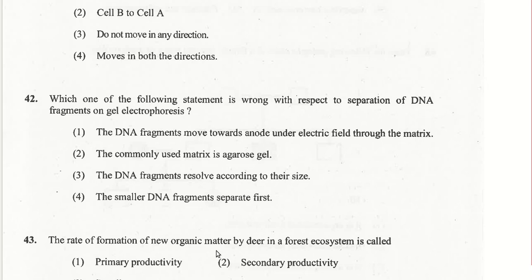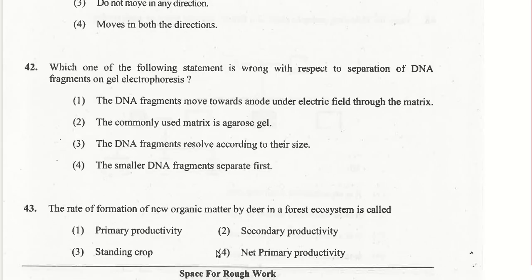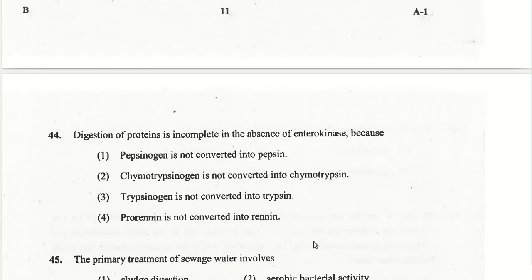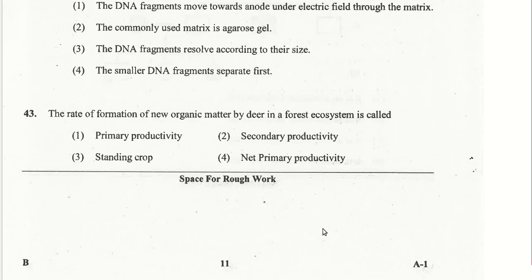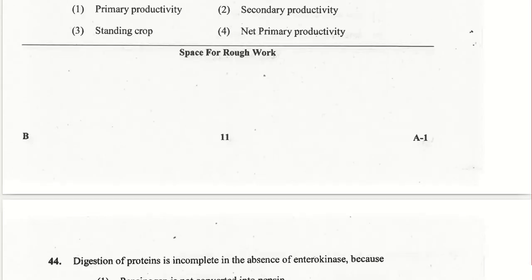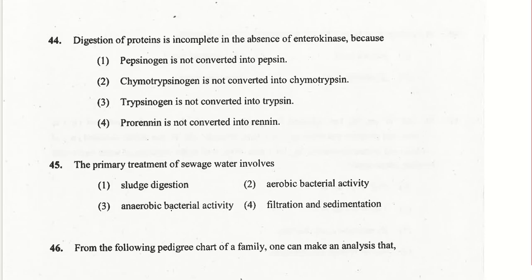The rate of formation of new organic matter by deer in a forest ecosystem is called secondary productivity. The second option is the answer for question 43.